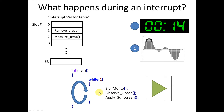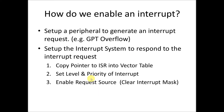What we're going to talk about in this video is how to set up all this stuff in our particular piece of hardware. The first thing we need to do is set up a peripheral to generate an interrupt, such as general purpose timer overflow, which is the example we're going to use. I'm not going to cover how to set up the peripheral in this video — you can look it up in the datasheet. We'll focus on setting up the interrupt system to respond to the interrupt request. This involves copying a pointer to the ISR into the vector table, setting the level and priority of the interrupt, and enabling the request source by clearing an interrupt mask.